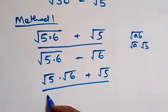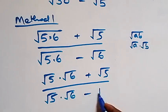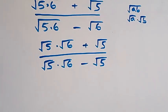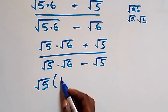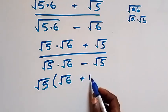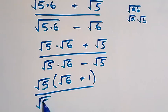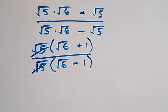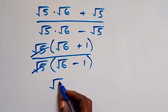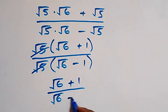The denominator becomes root five times root six minus root five. Root five is common in the numerator, so we factor it out: root five times (root six plus one). Similarly in the denominator, root five is common: root five times (root six minus one). The root fives cancel each other, leaving (root six plus one) over (root six minus one).